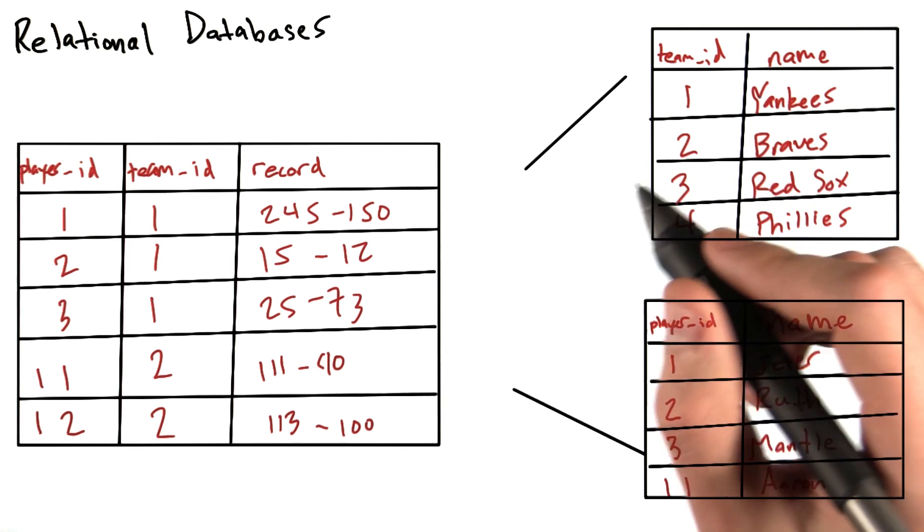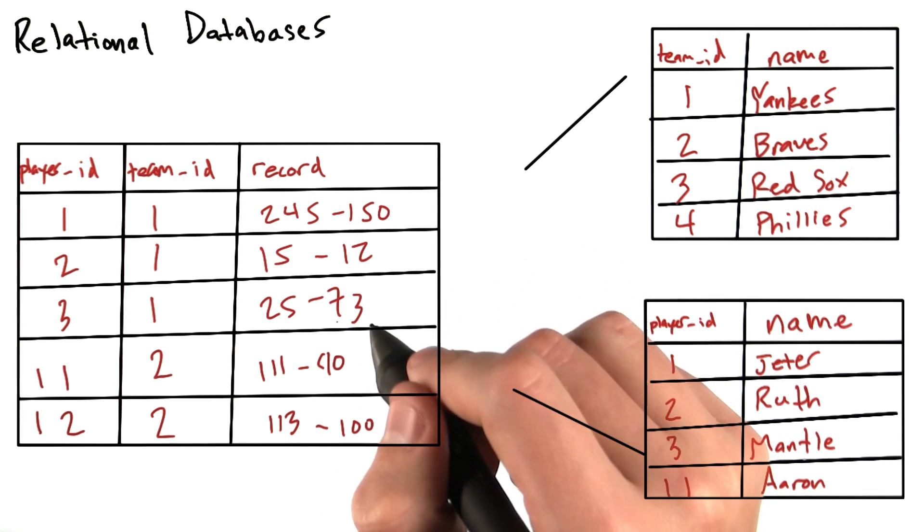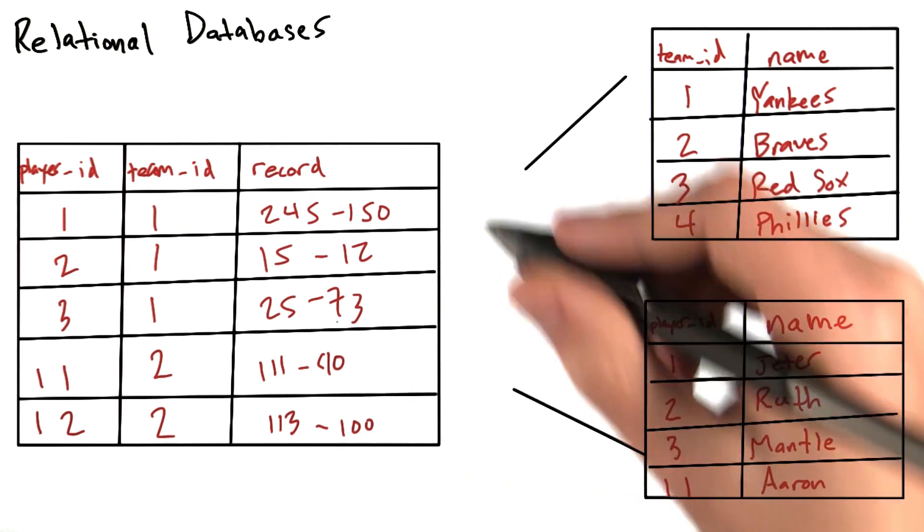In the database world, we call each set of rows and columns a table, rather than a spreadsheet. And the tables are usually related to each other in some way.